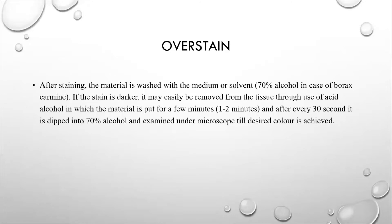Now, if the slide is overstained, first you have to check your sample under the microscope. If it is overstained, then you have to use the acid alcohol in which you put the material for few minutes, about 1 to 2 minutes. And after every 30 seconds, it is dipped into 70% alcohol and examined under the microscope till desired color is achieved.